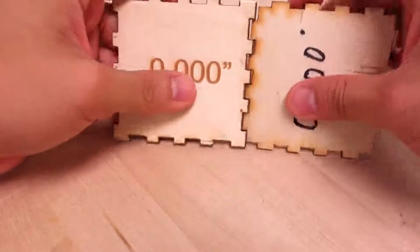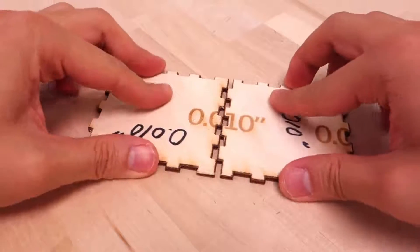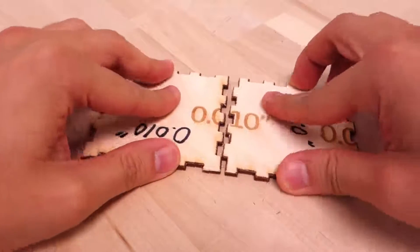When we set the kerf at zero and this is assuming no kerf the box is going to be way too loose. When you make the kerf too large here we have it at 0.01 the parts are going to be too tight.